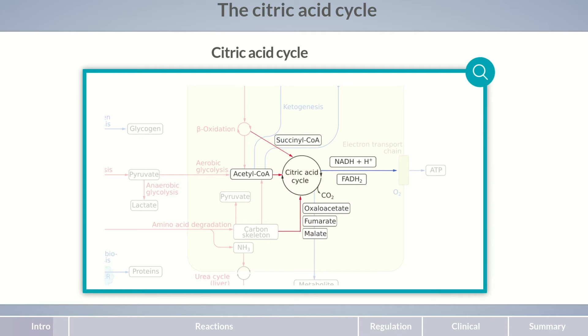These molecules are formed especially during aerobic glycolysis and beta-oxidation, but also during amino acid degradation. The citric acid cycle occurs in eight steps. We'll now introduce them to you in detail.